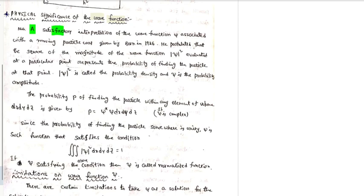A satisfactory interpretation of the wave function associated with a moving particle was given by Max Born in 1926. He postulated that the square of the magnitude of the wave function,